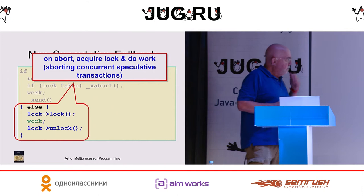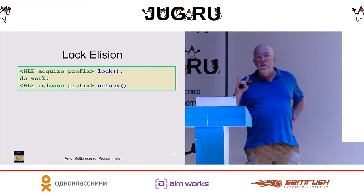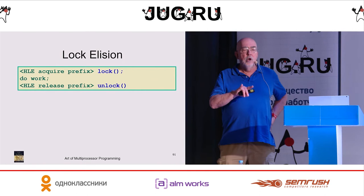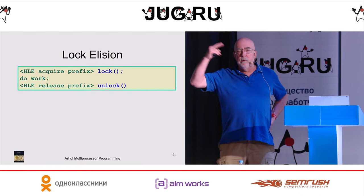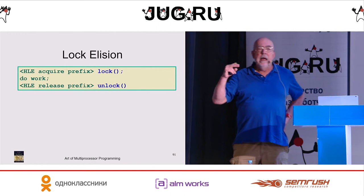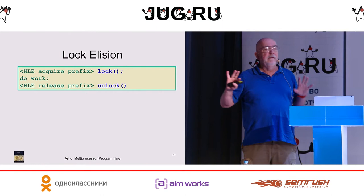This is such a common pattern that Intel has built it into the hardware. They provide something called lock elision, where you can take the binary code, and before each lock instruction, you can put an operation that is a no-op on architectures that don't support transactional memory, but that tells the hardware to execute everything between this lock and the unlock speculatively. This is nice because it means you can take legacy code — code written 10 years ago — edit the binary and get the benefits of speculative execution.